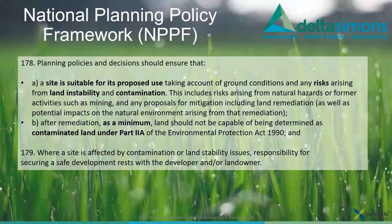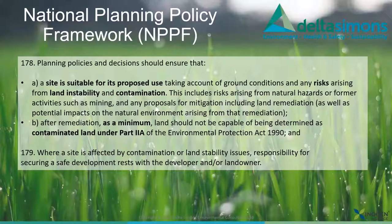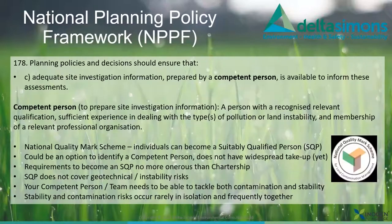Paragraph 179 of the framework states that where a site is affected by contamination or land stability issues, the responsibility will always rest with the developer and/or the landowner. Whatever planning permissions or regulatory approvals a developer may obtain through the planning process, that responsibility always resides with them.